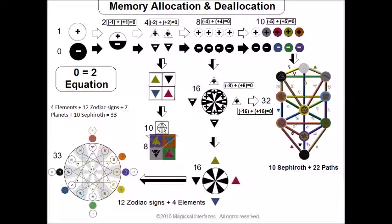Going from eight, we can go to sixteen, and once again that corresponds to the four elements and twelve zodiac signs.